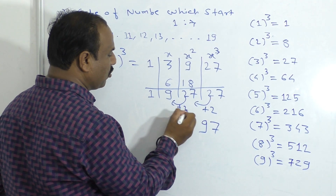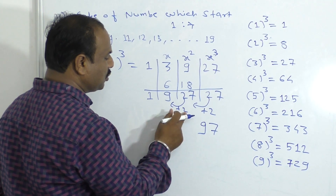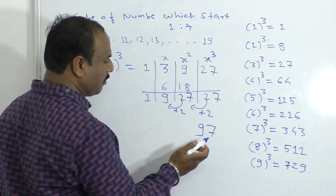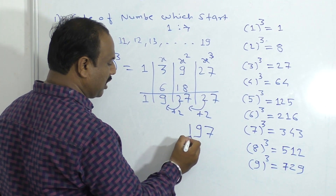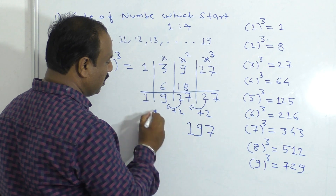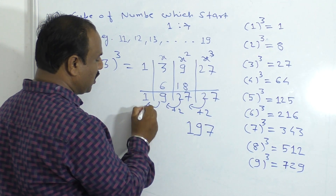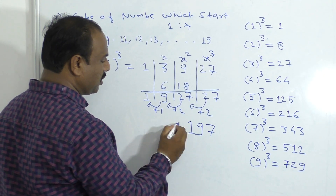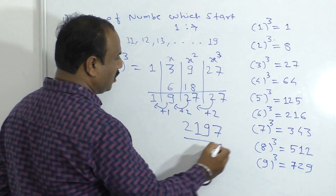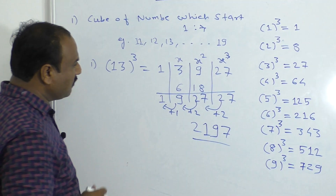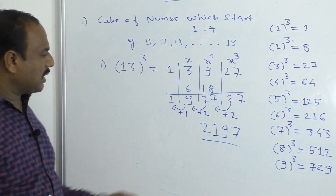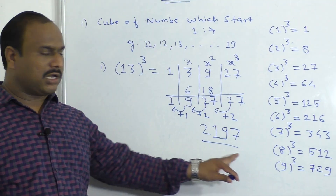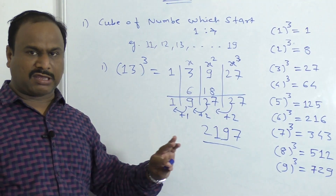So 9 plus 2 is 11, so 11 gives 1, and the remaining 1 plus 1 is 2. So we will make a cube of 13, so we get 2, 1, 9, 7.